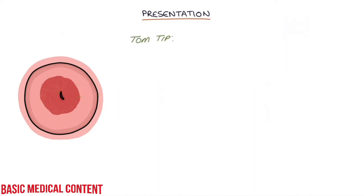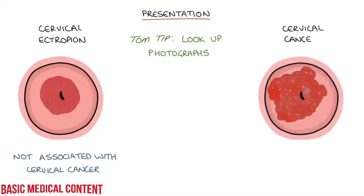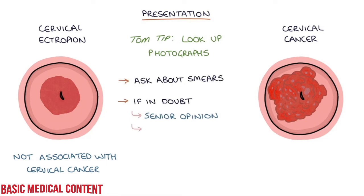A top tip for you: it's worth looking up photographs of cervical ectropion and becoming familiar with their appearance. They're very common to see on speculum examination and could look alarming the first time you see one. Ectropions are not associated with cervical cancer in any way, but it's worth getting familiar with distinguishing them from the appearance of cervical cancer. If you see one, always ask about smears, and if you're in any doubt, get a senior opinion and consider referral for a colposcopy to look at the ectropion in detail.